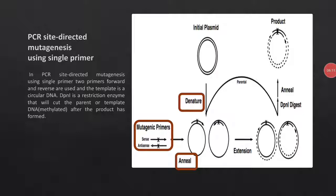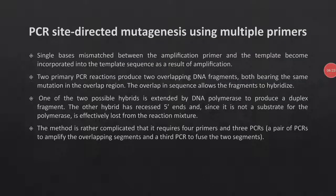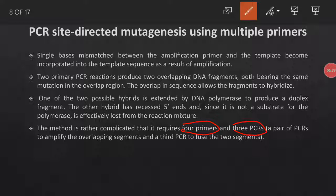The product will be two daughter strands joined together by hydrogen bonds. For PCR SDM using multiple primers, we will use three PCR cycles and four primers. In the first two PCR cycles, we will make two overlapping DNA fragments.